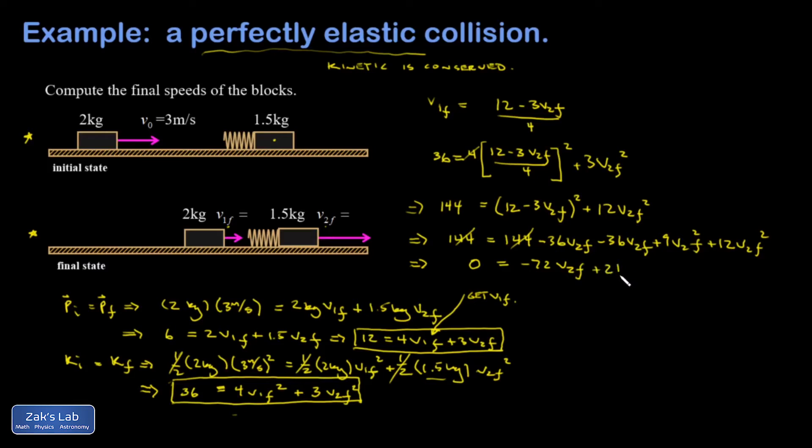So I end up with a negative 72v2 final plus 21v2 final squared equals zero. We'll just move over here, and a v2 factors out of this, so I don't have to do a non-trivial factorization like I would have to do if I had solved for v1 first. And I get a negative 72 plus 21v2f.